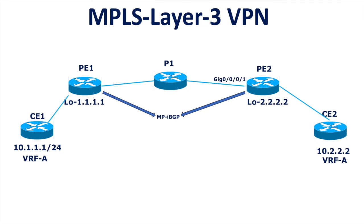Hi guys, in this video I am going to discuss about some of the intricacies related to MPLS Layer 3 VPN. This is a typical topology where you have a CE router connected to PE1, then it goes to the provider router, then to the remote PE2 router, and then to CE2. Let's consider we have a Layer 3 VPN running between PE1 and PE2.